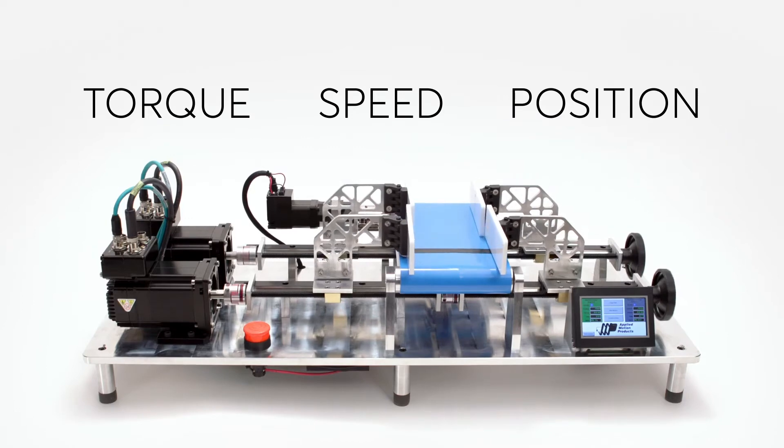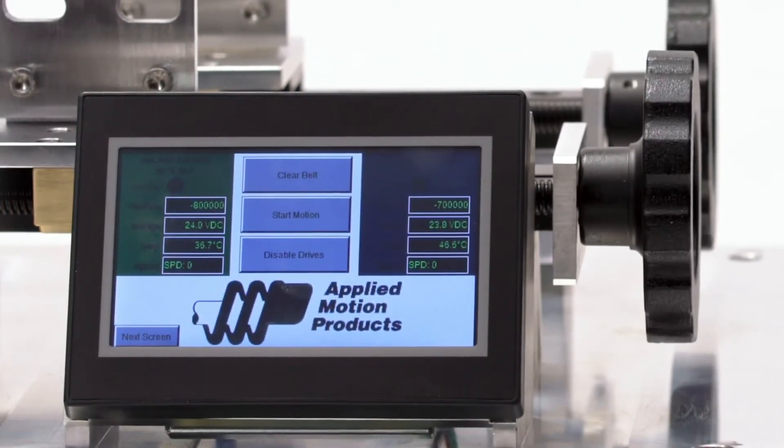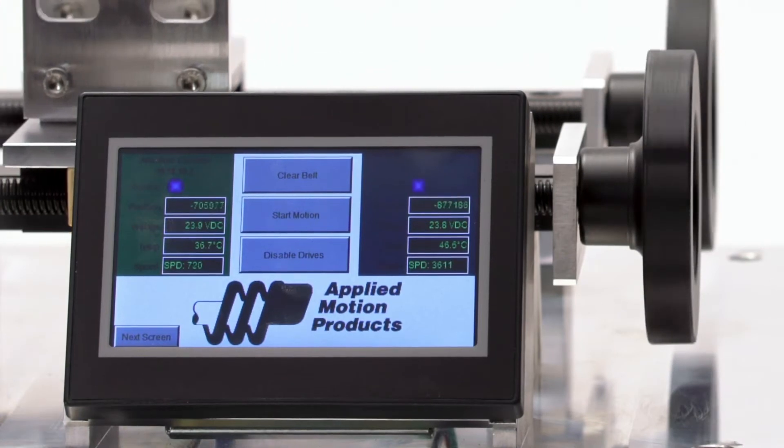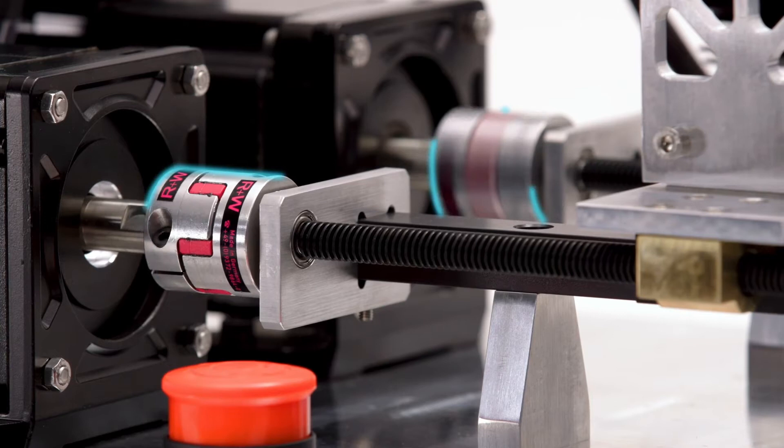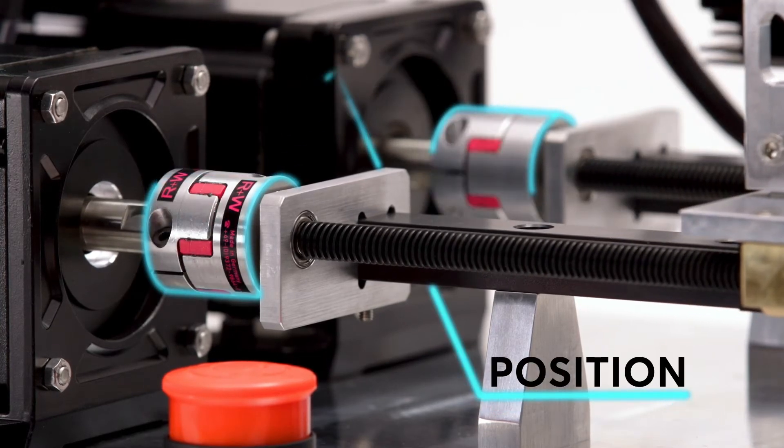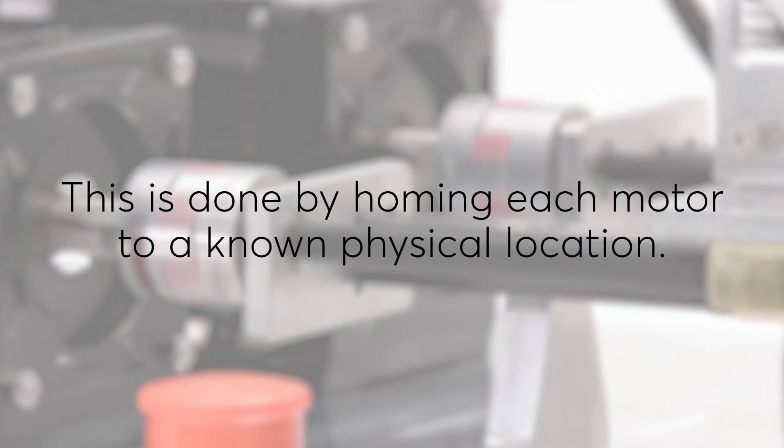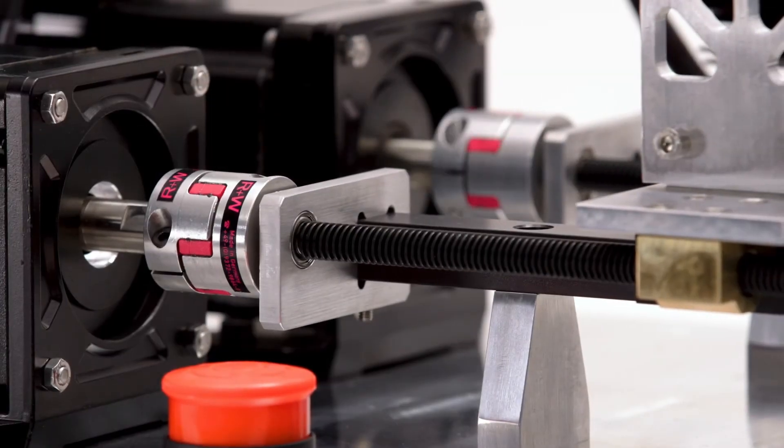In multi-axis machinery, the accurate position of every motor must be known at all times for the machine to operate successfully. A critical step in the operation of a machine is to determine the position of every motor in relation to the others. This is done by homing each motor to a known physical location and is usually done at power-up or during initialization.